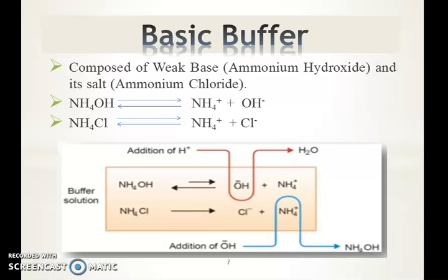In the basic buffer system, if we add a small quantity of hydrochloric acid, it dissociates into the hydrogen ion and chloride ion. The hydrogen ion is responsible for decreasing the pH. But in the basic buffer, the hydrogen ion combines with the hydroxide ion and forms a water molecule, which is neutral — resulting in no change in pH. In this way, the basic buffer resists sudden change in pH upon addition of hydrochloric acid.